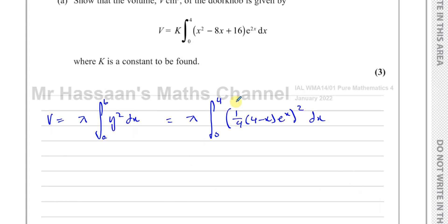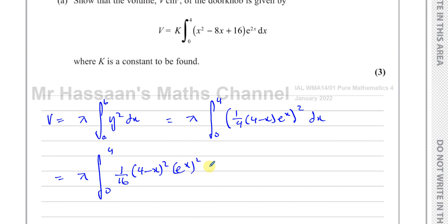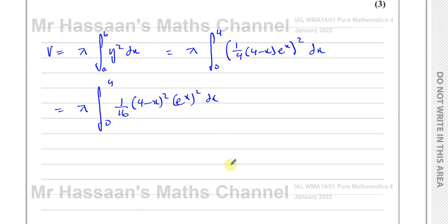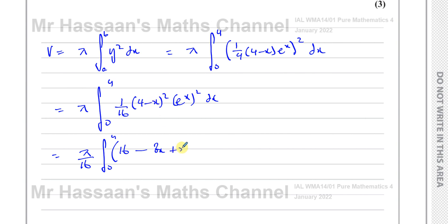This will simplify to something we can proceed with. We have π times the integral between 0 and 4. A quarter squared is 1 over 16, then you've got times 4 minus x, all squared, times e to the power of x, all squared, dx. We can separate them out and take out the 1 over 16, giving π over 16. Squaring the bracket gives 16 minus 8x plus x squared. And e to the power of x all squared gives e to the power of 2x, which has to be integrated with respect to x.